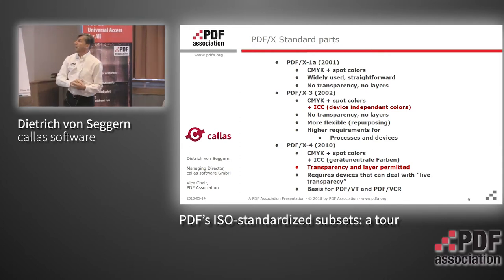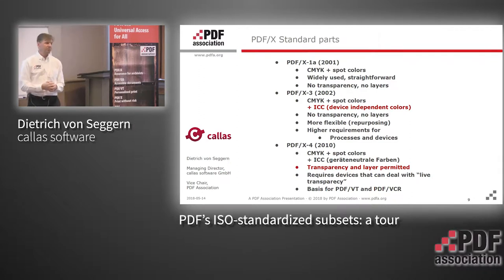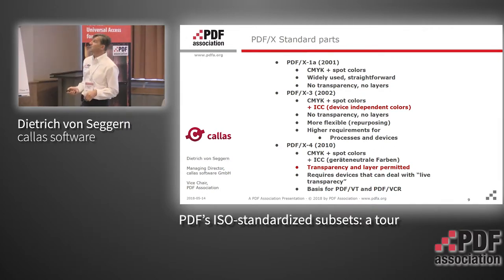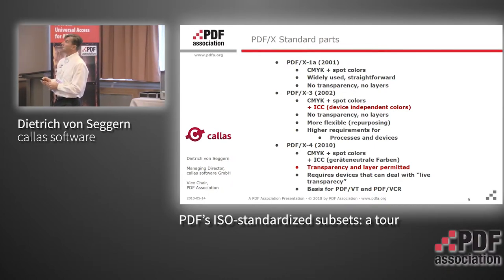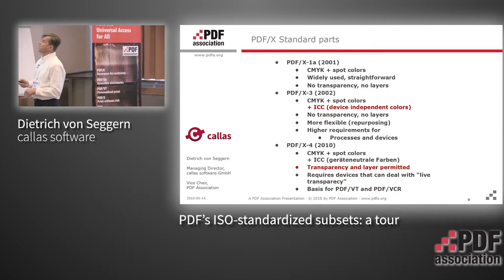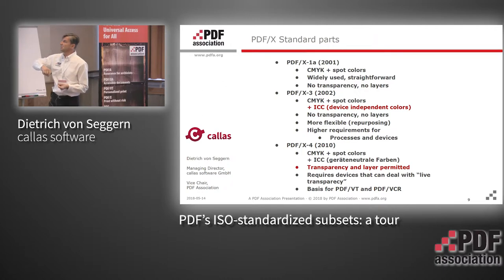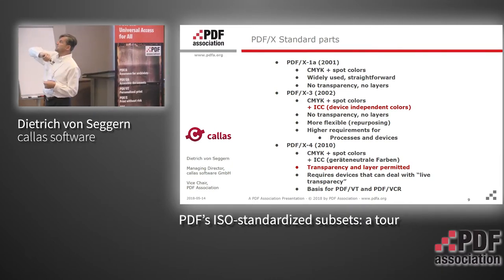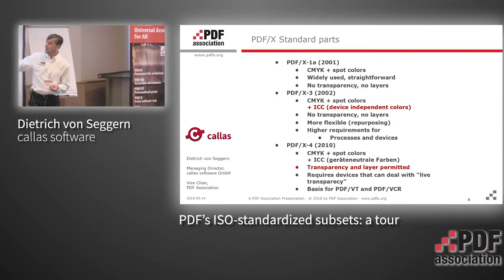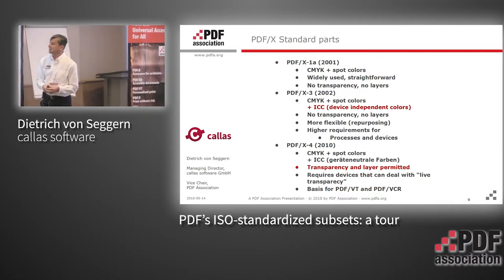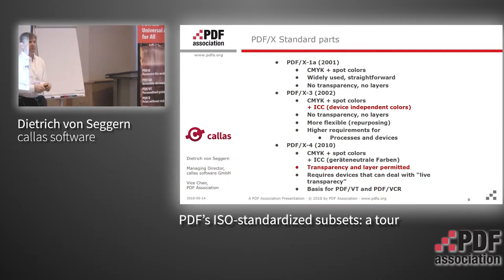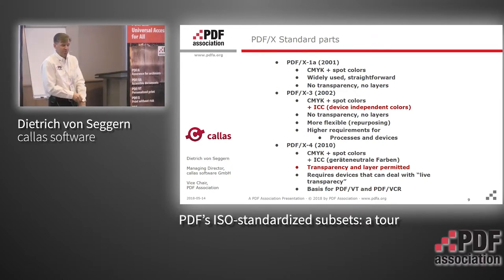PDF/X-1a came out in 2001 — the first PDF-based ISO standard — and was basically just the print color space CMYK. PDF/X-3 came out shortly thereafter, with one major difference: it supports device-independent colors with ICC-based colors. Then PDF/X-4 came out eight years later, and the new thing there was that transparency and layers are permitted — PDF/X-1a and PDF/X-3 didn't support transparency.